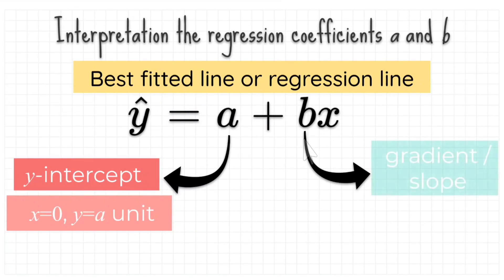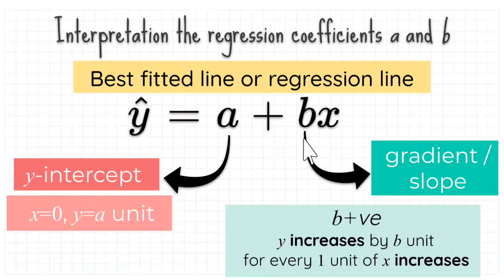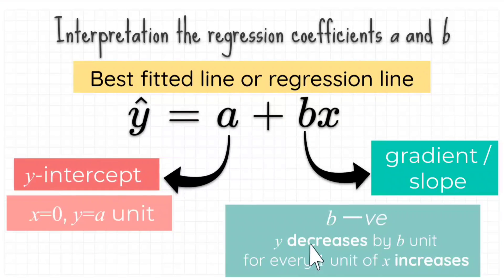B is the gradient or slope of the regression line, represent the change in y for every one unit change in x. If b is positive, y increases by b units for every one unit of x increases. If b is negative, y decreases by b units for every one unit of x increases.